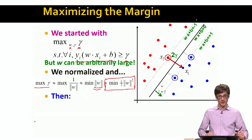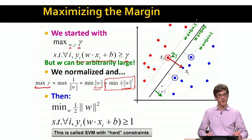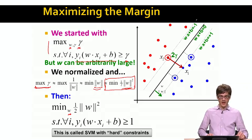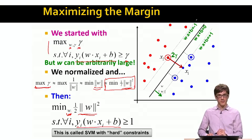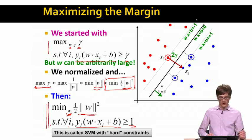So now that we have transformed maximization of gamma to the minimization of the length of w, we can now write down the support vector machines margin maximization optimization problem. So our goal right now is the following. We want to minimize the length of w. So we want to find w such that it has the smallest length, while our classification margin, our confidence in classification of all the training data points is greater than 1. And this optimization problem that I wrote down here is called SVM or support vector machine with hard constraints.